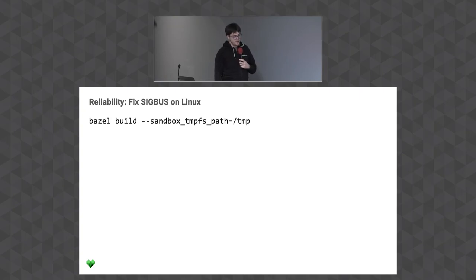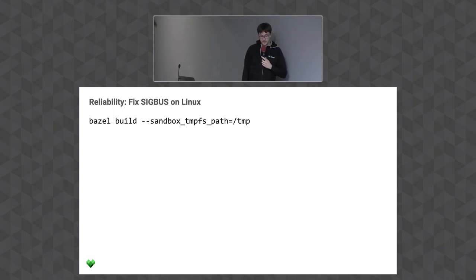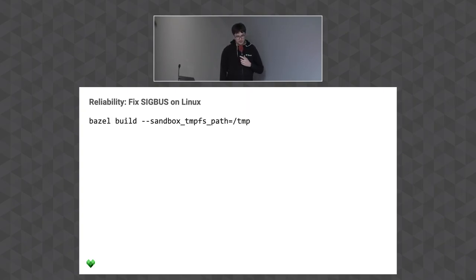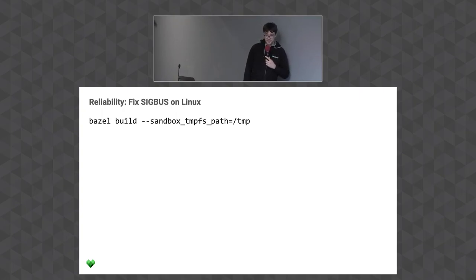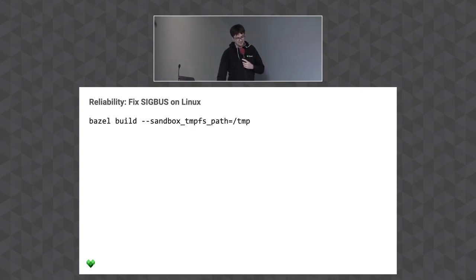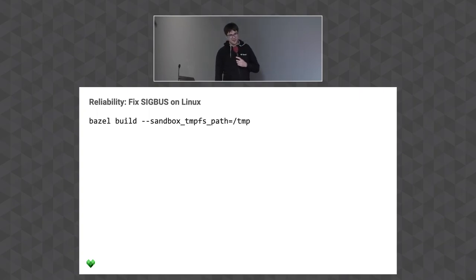My favorite feature: SIGBUS. If you use sandboxing on Linux and use the JVM — Java, Scala, whatever — you might have observed mysterious crashes with SIGBUS. After extensive debugging it turned out the JVM has the habit of writing a file to /tmp with its PID in the name because that's unique, and then memory-mapping it. But if you use the sandbox, all JVMs have the same PID because they run in the PID namespace, and if you use a shared /tmp there will be a race: if one JVM mmap's while another truncates that file — SIGBUS.